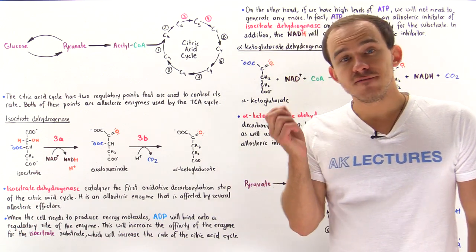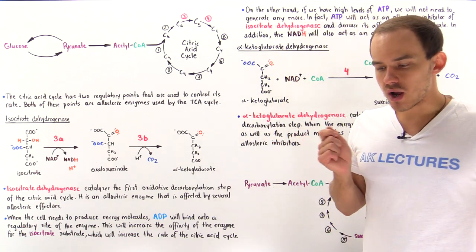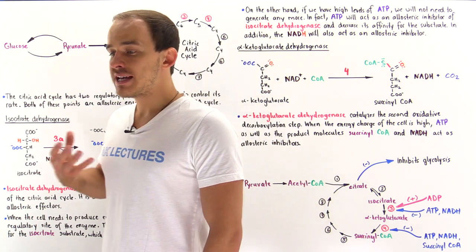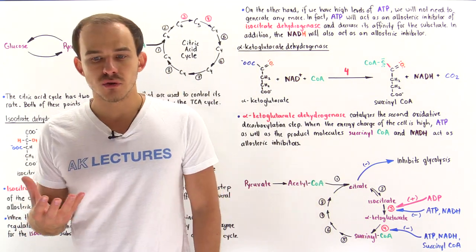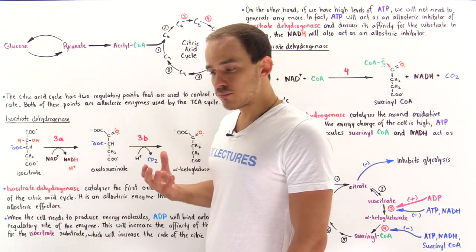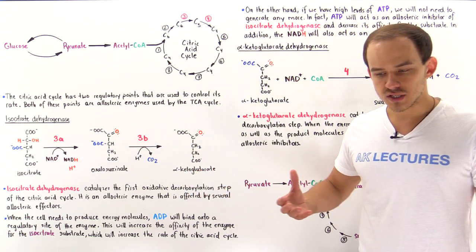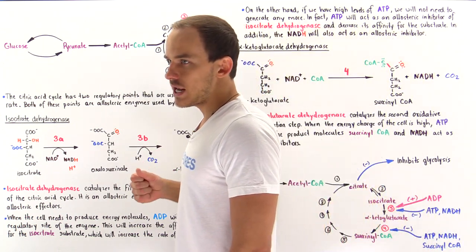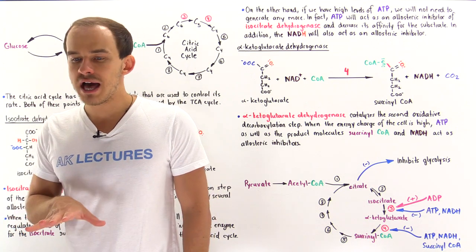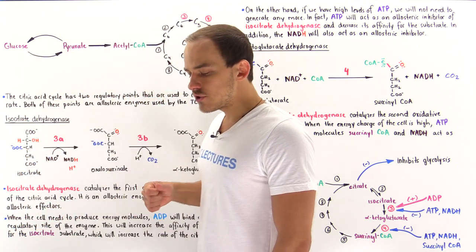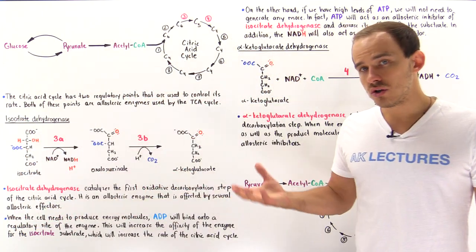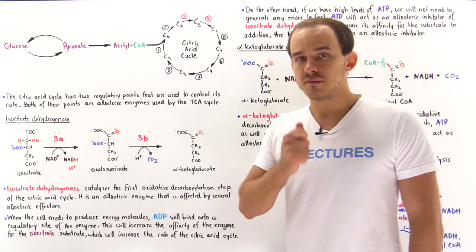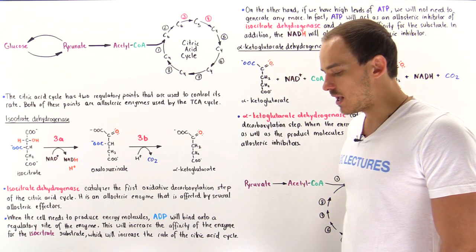The citric acid cycle is a very important process inside our cells because it's how we're able to actually metabolize fuel molecules. It's how we can break down glucose molecules and amino acids and fats to form high energy ATP molecules. On top of that, as we'll see in a future lecture, the citric acid cycle is also used to synthesize many types of building block molecules used by our cells.